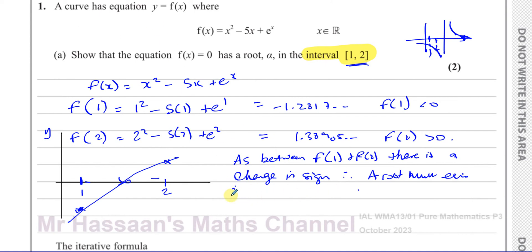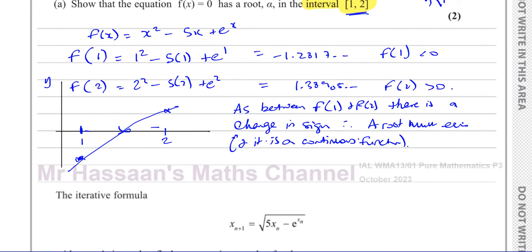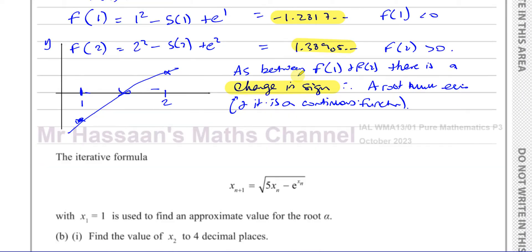It's worth noting this works because it's a continuous function — one with no asymptotes. When you have an asymptote, sometimes there is a change in sign but there's no root: you could have a graph where between two points the function goes negative then positive across an asymptote. So continuous function plus change in sign means a root must exist. They want to see the actual values you substituted and the phrase 'change in sign' — that must be in your working to get the mark.